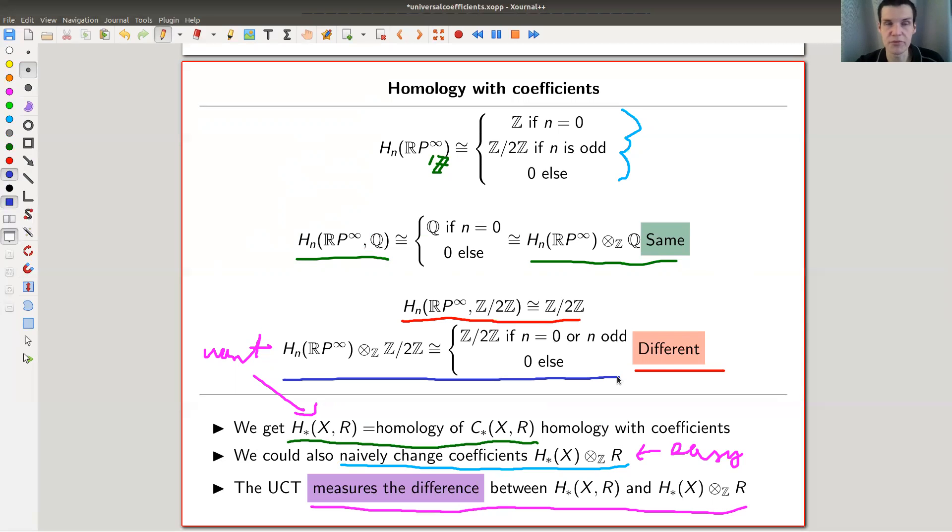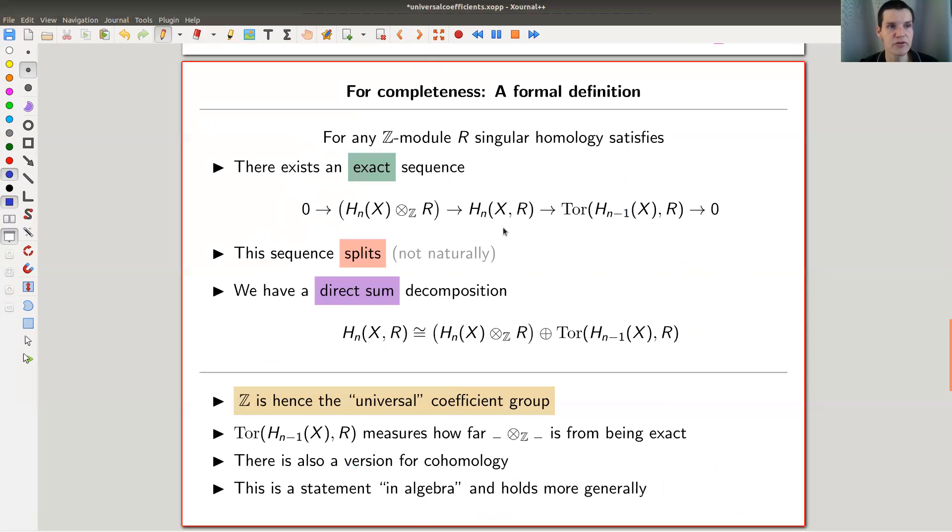So it's a bit subtle what happens depending on whether you first tensor then take homology - that's the right one, that's the one you want - or you first take homology and then tensor - that's the easy one, that's the one you usually compute in one line. Again, the universal coefficient theorem tells you that they're roughly the same. So don't look too much here, I will come back to the Tor in a second. But basically it says they're roughly the same. So the easy one misses a little bit and the little bit is captured by this Tor factor.